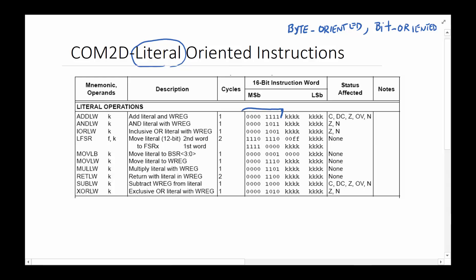These instructions are set up the same way. The opcode — the machine code value indicating what instruction is being executed — is typically the most significant eight bits. For example, 00011110 indicates an AND, and 00010101 00 indicates an exclusive OR. The remaining eight bits, represented by k, are the constant value. So if the number you want to work with is 25 hex, the binary for 2 is 0010 and for 5 is 0101 — those are the values you put in k.